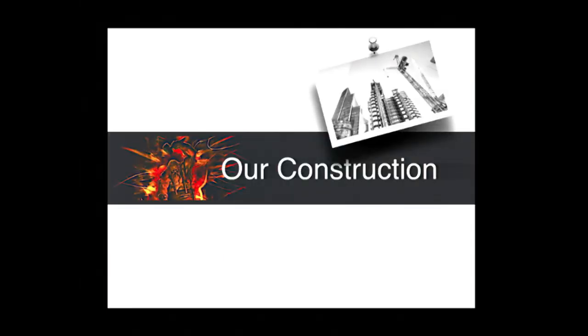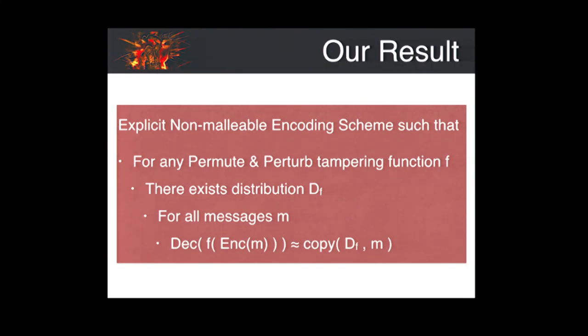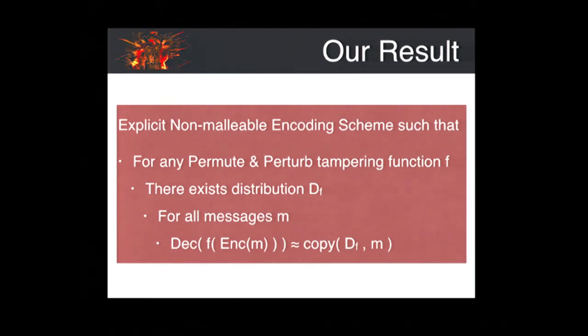Let me explain what our construction is. I need to give an encoding scheme such that for any tampering function which permutes and perturbs, I have to show existence of a simulating distribution D_f, such that for any message being encoded, the real message encoded in the tampered codeword is close to the simulated distribution. To explain the encoding, I need to introduce some basic encoding schemes.